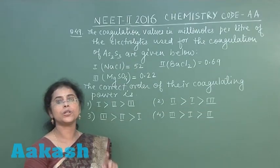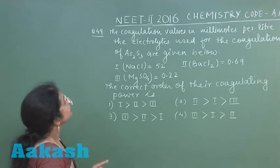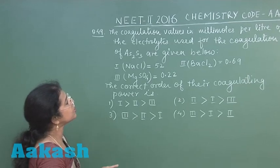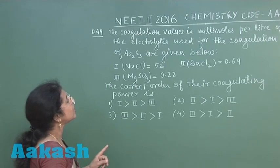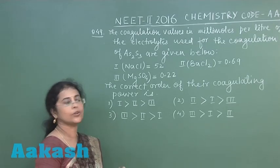Next question of paper is question number 49. The coagulation values in millimoles per liter of the electrolytes used for the coagulation of arsenic sulfide are given below.